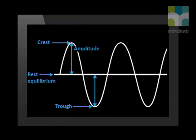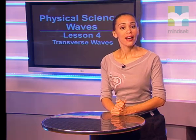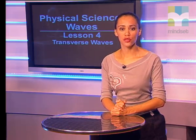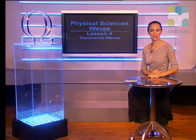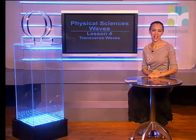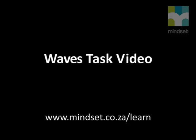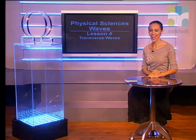These bottom and top parts also have special names. The top is called a crest and the bottom is called a trough. Now we know how to describe a transverse wave. This brings us to the end of our lesson. Attempt a task on this topic in the task video presented on the Mindset website. Take care and goodbye.